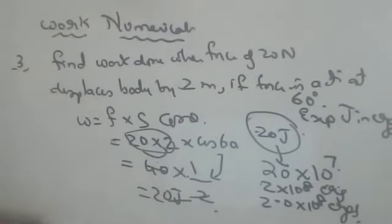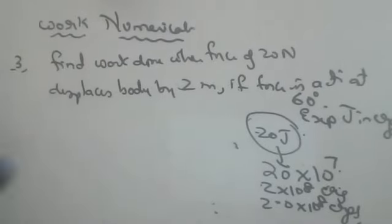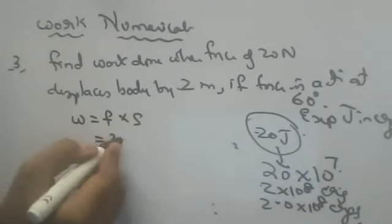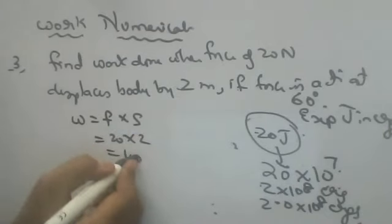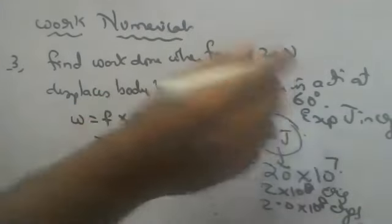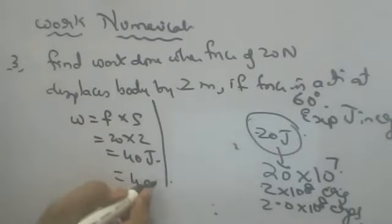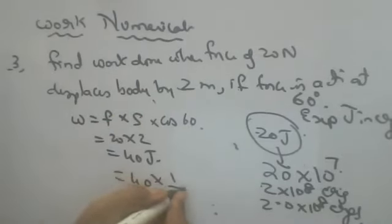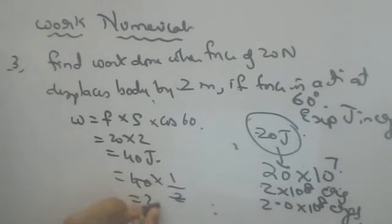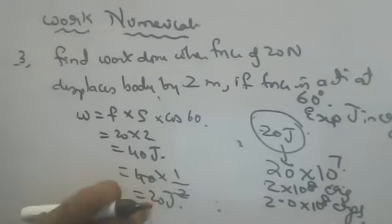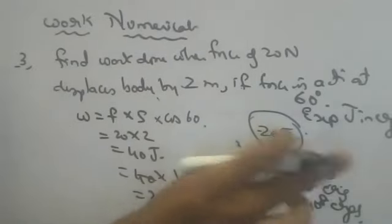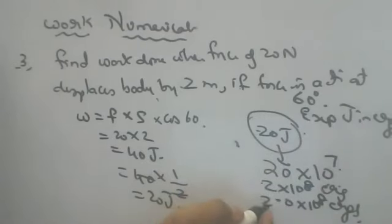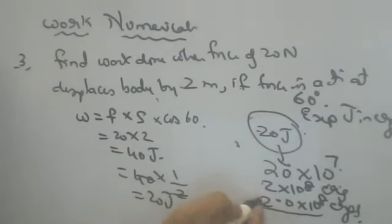So the first sum: directly it was W = F × S. I told 20 × 2, that is 40 joules. Second sum: they are at an angle of 60 degrees, so we used F × S × cos 60. Cos 60 is 1/2, so we got 20 joules. Third question: convert 20 joules into ergs — so 20 × 10 to the power of 7, that is 2 × 10 to the power of 8. In standard form: 2.0 × 10 to the power of 8 ergs.